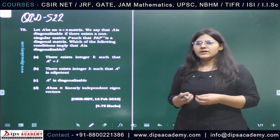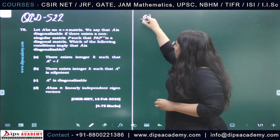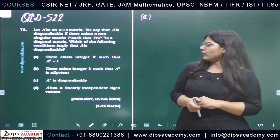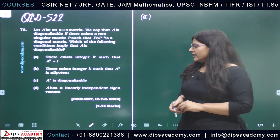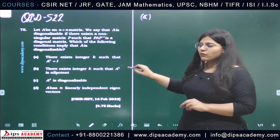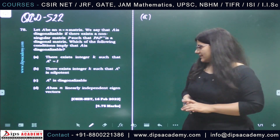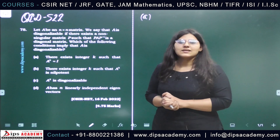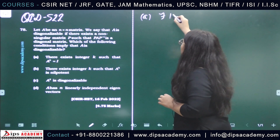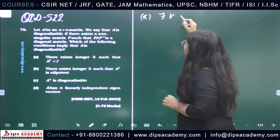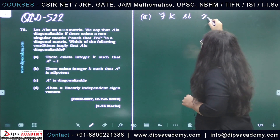Since this is a multiple correct question, we have to verify all four options. In this question, we have a matrix A and we need to find out which of these four conditions implies that A is a diagonalizable matrix. Let's start with option A.